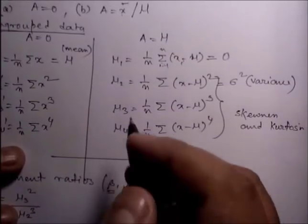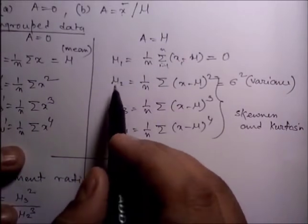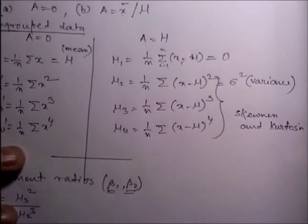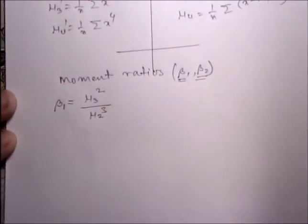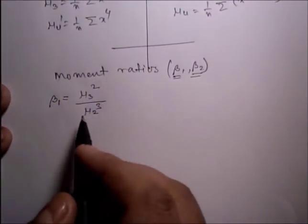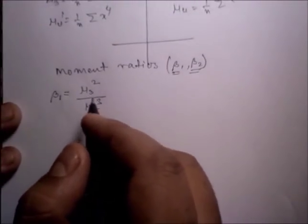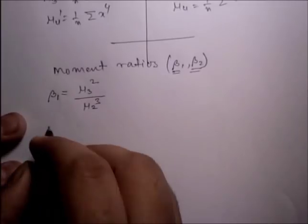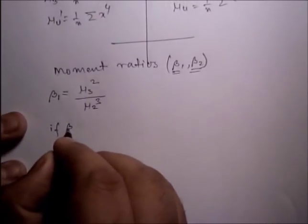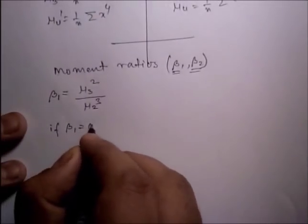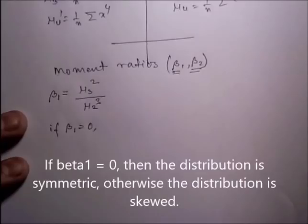Beta_1 is nothing but mu_3 squared divided by mu_2 cubed. If beta_1 is equal to 0, then the distribution is symmetric. Otherwise, the distribution is skewed.